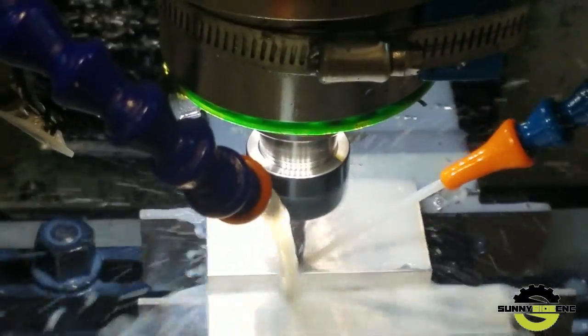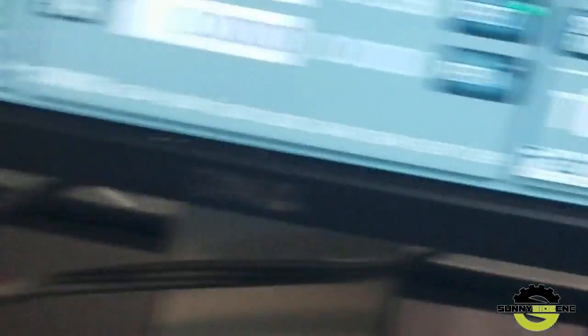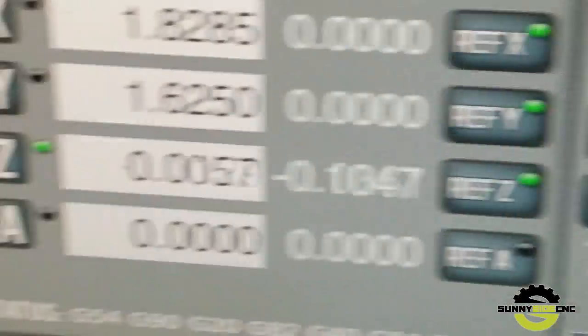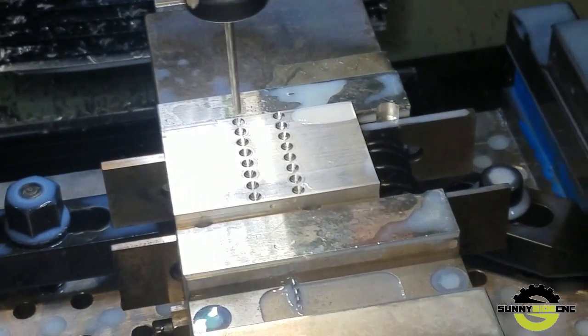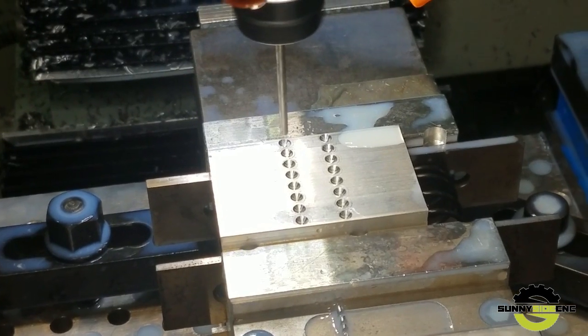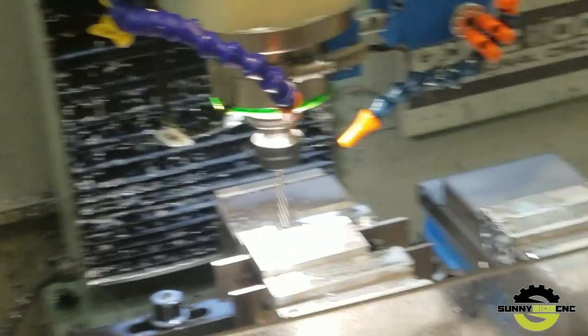We're spot drilling right now. We're going 458 rpm and feed of 20 inches a minute, and then each hole we dwell for a half a second. So we got that spot drilling done. Like I said, it's gonna help guide that drill to exactly the center of the hole, and then it's gonna help the tap to find its way in.